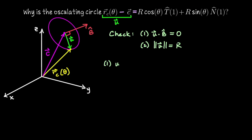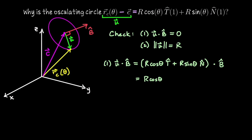To check the first condition, take U dotted with the binormal vector. Replacing U with R·cos(θ)·T + R·sin(θ)·N, and dotting with B̂, we get R·cos(θ)(T · B̂) + R·sin(θ)(N · B̂). Each of these dot products is zero because T, N, and B are all mutually orthogonal. So we pass the first test.